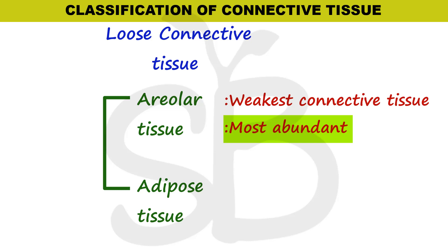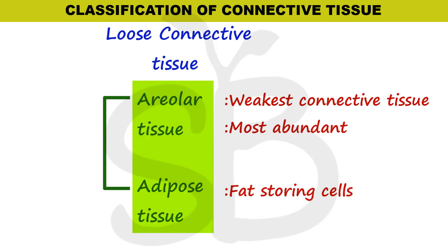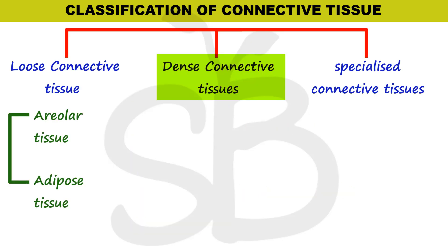Areolar connective tissue is a loose connective tissue. Then there is adipose connective tissue. Adipose means fat. The main function of adipose connective tissue is fat storage. Cells store fat in adipose connective tissue. These two are the types of loose connective tissue.